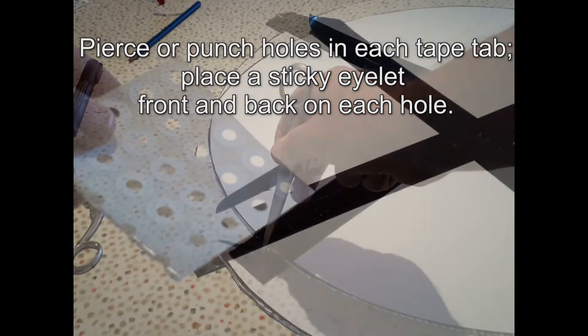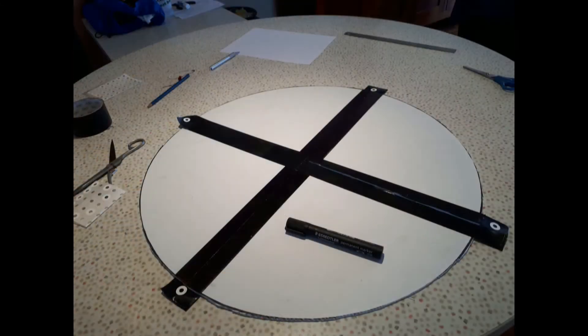Pierce or punch holes in each tab and then place a sticky eyelet front and back on each of the holes you made.